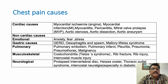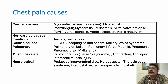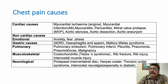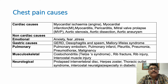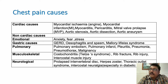Gastric causes include gastroesophageal reflux disease, esophagitis, esophageal spasm, and Mallory-Weiss syndrome, all of which can cause severe epigastric pain associated with gas, flatulence, nausea, vomiting, and dyspepsia. Emotional conditions like anxiety, fear, and stress can also present with chest pain.